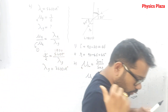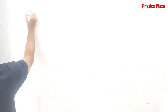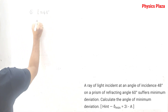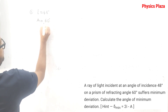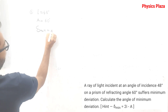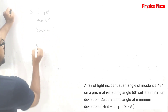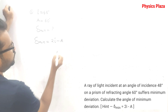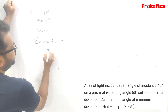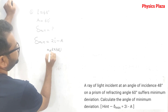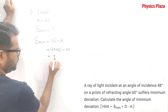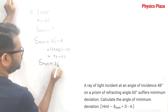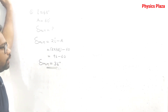In the first question of exercise 4B: angle of incidence is 40 degrees and the angle of the prism is 60 degrees. They are asking us to calculate the minimum angle of deviation. Using the formula: minimum angle of deviation = 2i − A = 2 × 40° − 60° = 80° − 60° = 36 degrees.